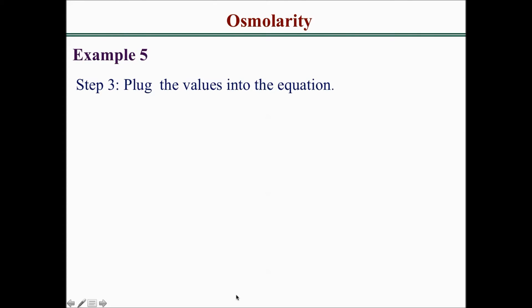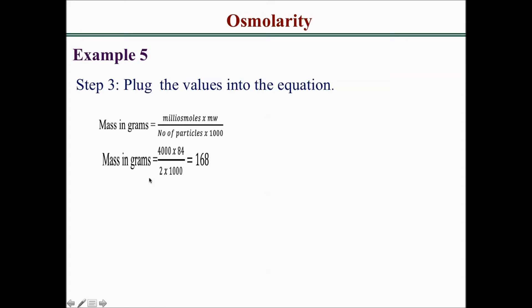Step 3 is to plug in the values. We have 4,000 milliosmol times 84 (molecular weight), divided by 2 (number of particles) times 1,000. This gives us 168 grams. So 168 grams of sodium bicarbonate will provide an osmolarity of 4,000 milliosmol per liter.